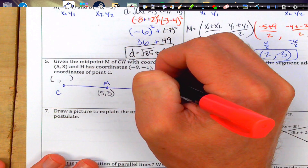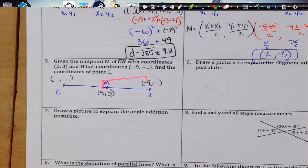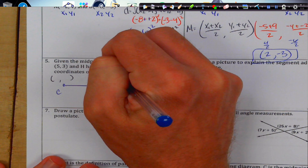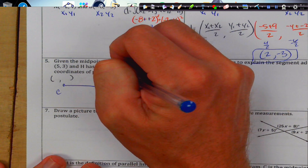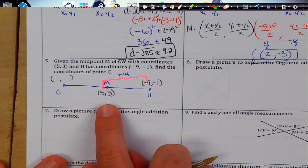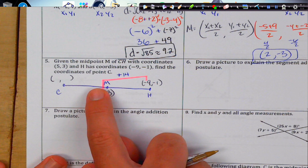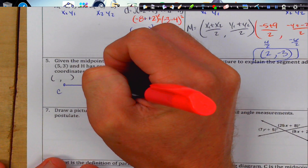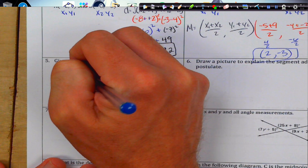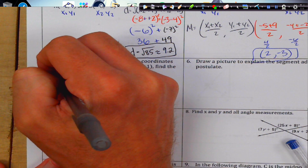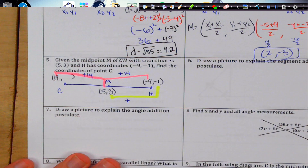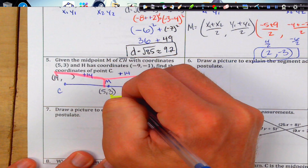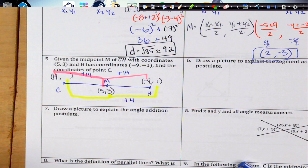Using the idea of equal distances from midpoint: how do I go from −9 to 5? Going from negative to positive, I add 9 to reach 0, then 5 more, so I'm adding 14. Since M is the midpoint, I do the same from M to C, adding 14 again. That gives 5 plus 14 equals 19. For the y-values: going from −1 to −3, I add 1 to reach 0 and then 3 more, so adding 4. Then 4 plus 3 is 7. Wait — adding 4 again from −3 gives us 7 for the y-coordinate.